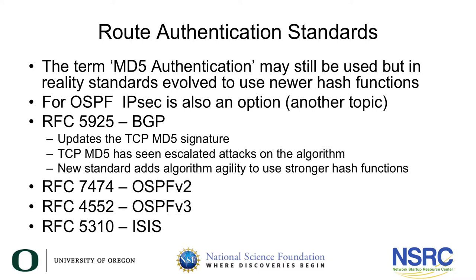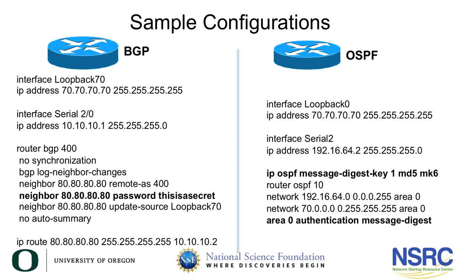With MD5 authentication — or SHA-1 or SHA-2 if supported by the router vendor — route authentication using cryptography can be utilized for any routing protocol. There are RFCs defining how to do this for OSPF, ISIS, and BGP. Here are some configuration examples; as you can see, it's quite simple.